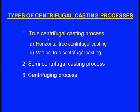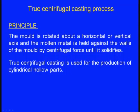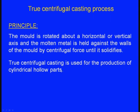What is the true centrifugal casting process? The mould is rotated about a horizontal or a vertical axis and the molten metal is held against the walls of the mould by centrifugal force until it solidifies. True centrifugal casting is used for the production of cylindrical hollow parts — that is its main application.